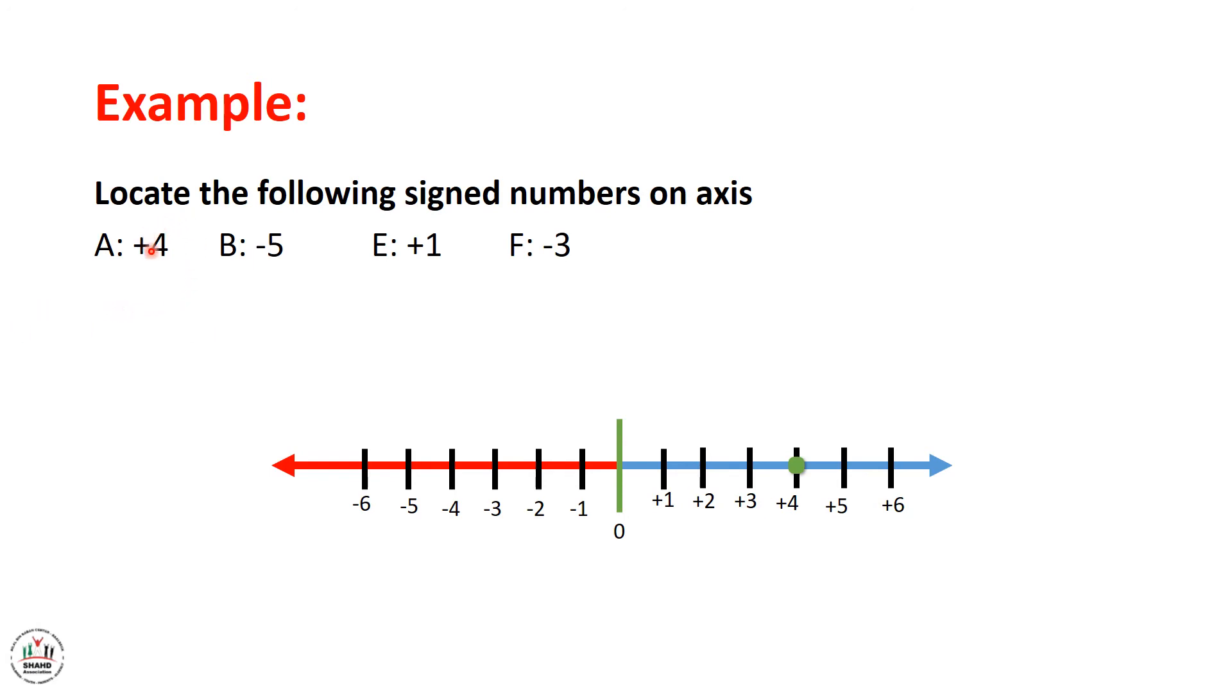A plus 4. Since the sign of 4 is positive, we should move from 0 by 4 numbers to the right. 1, 2, 3, 4. And we locate here a point A.